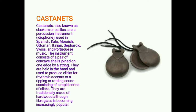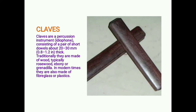Castanets, also known as clackers or palillos, are a percussion idiophone used in Spanish, Moorish, Ottoman, Italian, Sephardic, Swiss, and Portuguese music. The instrument consists of a pair of concave shells joined on one edge by a string. They are held in the hand and used to produce clicks for rhythmic accents or a ripping or rattling sound consisting of a rapid series of clicks. They are traditionally made of hardwood, although fiberglass is becoming increasingly popular.